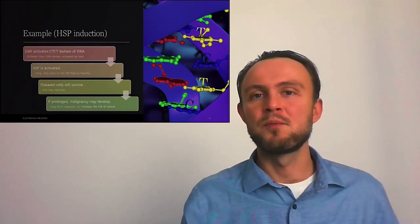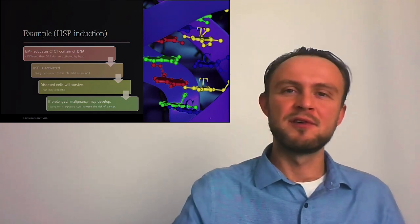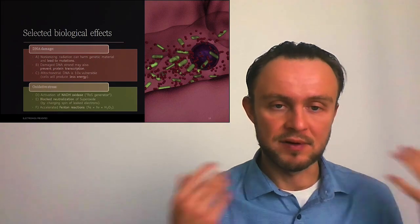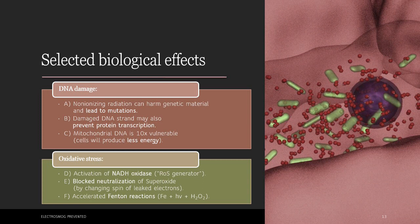So we know that long-term exposure to electromagnetic fields can increase the risk of cancer. We have just illustrated how prolonged phone calls can result in acoustic neuroma, which would be better to prevent from happening. But there are also many other biological effects that can result in harmful health effects. We know that non-ionizing radiation can harm genetic material and lead to mutations. It can also damage DNA strands, which may also prevent protein transcription. This essentially means that our body cannot produce important proteins and enzymes that perform many tasks that our body needs to function properly. We also know that mitochondrial DNA is 10 times more vulnerable to these effects. Mitochondria are our cell power plants. So if these are damaged cells will produce less energy.